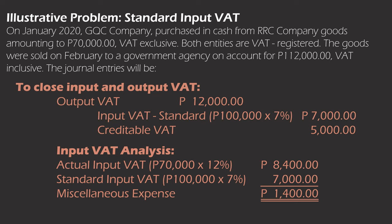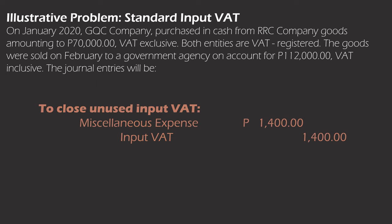As you can see, there is no actual VAT payable to be remitted to the BIR. We have actual input tax of 8,400, while standard input tax is unique because it is computed based on government sales — in this case, 7% × 100,000 = 7,000. There is a difference of 1,400, which shall be closed to miscellaneous expense. To close the unused input VAT at end of period: debit miscellaneous expense 1,400; credit input VAT 1,400.